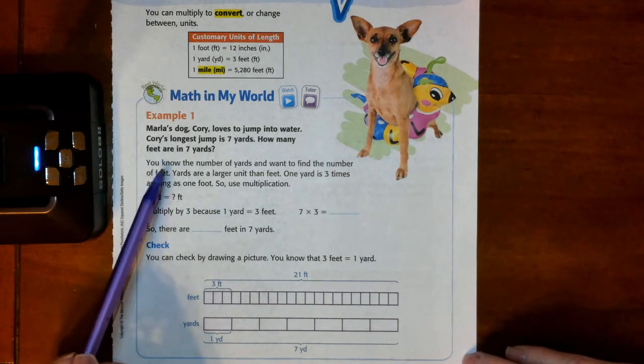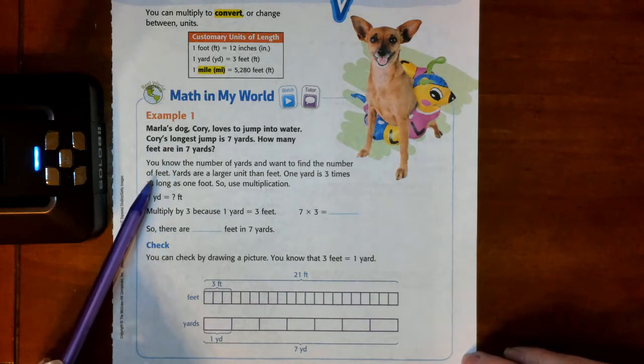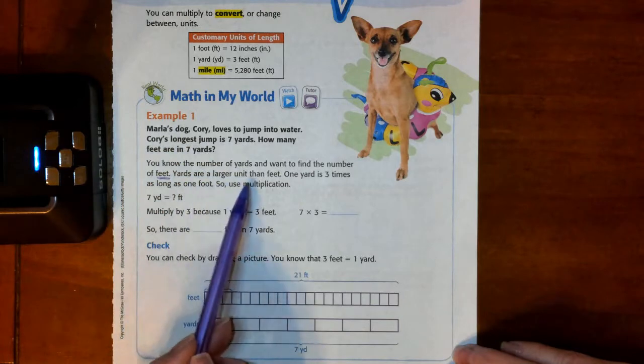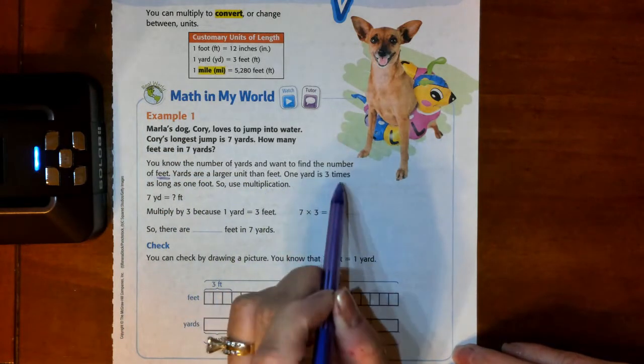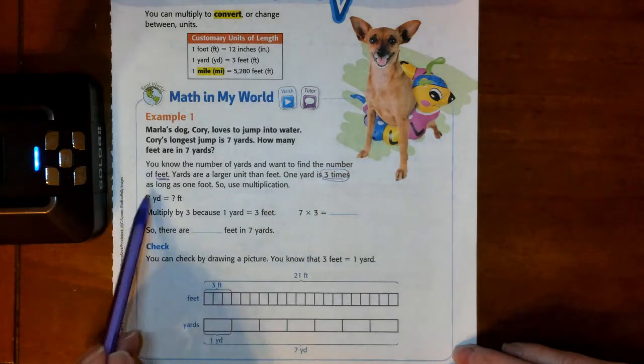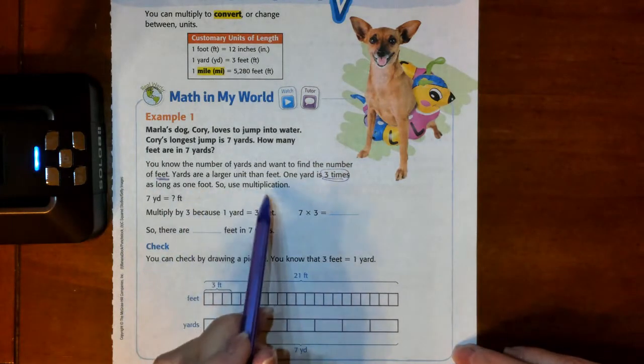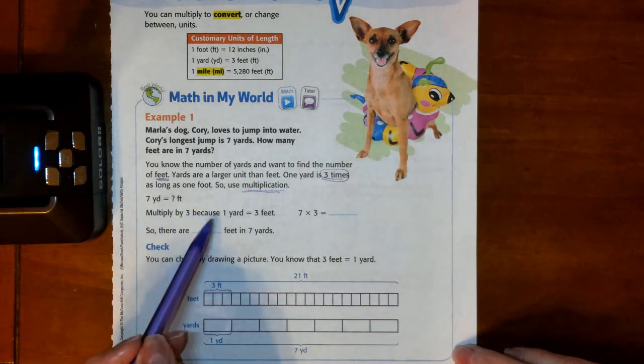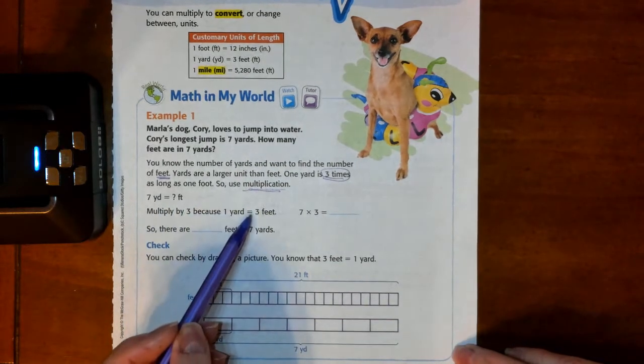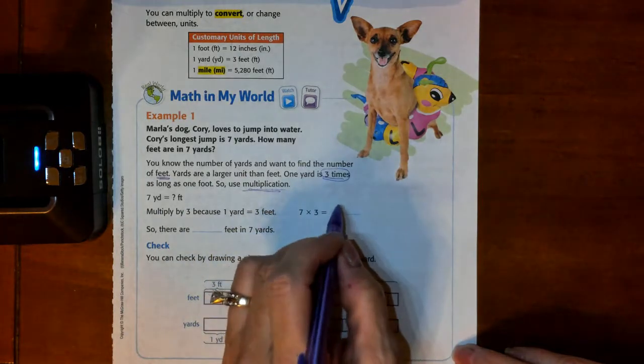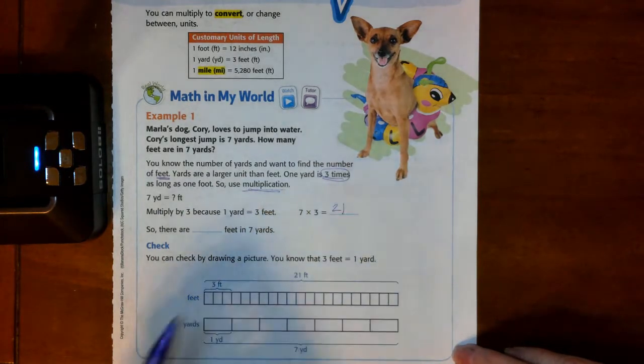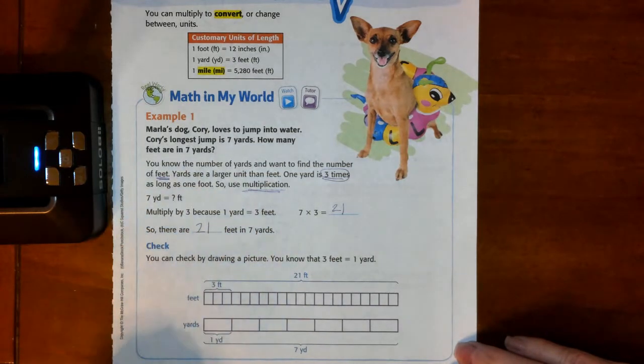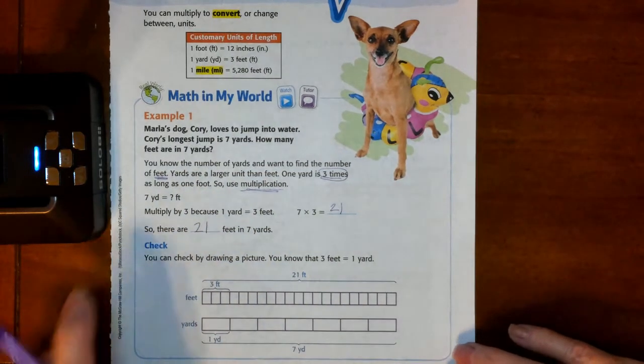We know the number of yards and we want to find the number of feet. Yards are larger than feet. 1 yard is 3 times as long as 1 foot. So we're going to use multiplication. We're going to multiply by 3 because 1 yard equals 3 feet. So 7 times 3 is 21. There are 21 feet in 7 yards.